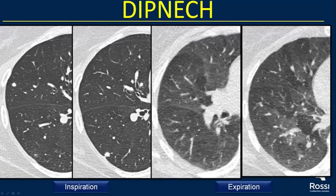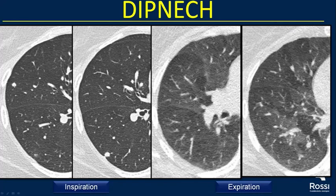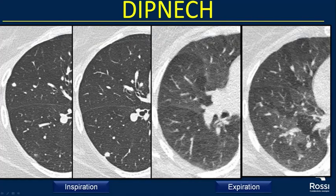DIPNECH is a rare and largely unknown disease due mainly to neuroendocrine cells, usually seen in women. When you see a woman with diffuse small nodules around the parenchyma, perform an expiratory CT. In this patient we have the nodules, and the expiratory CT shows areas of normal lung and areas of air trapping with diminished vascularity due to DIPNECH.